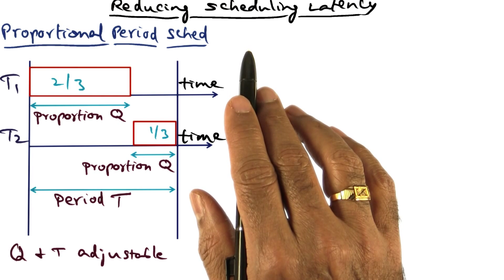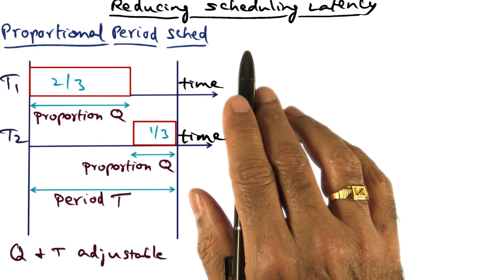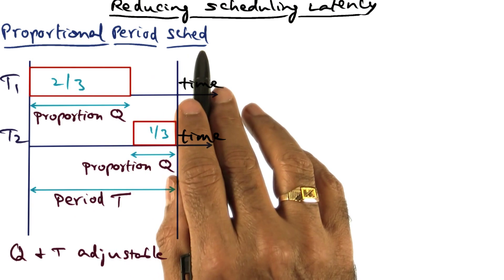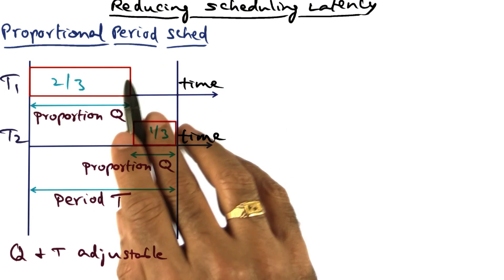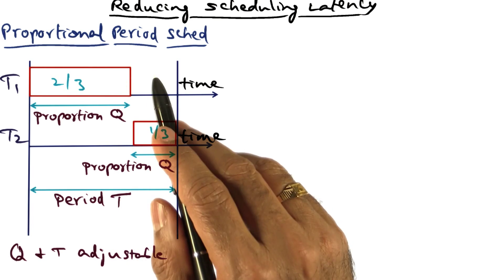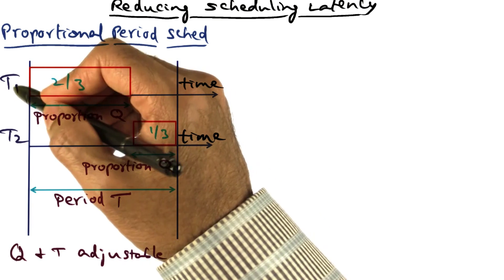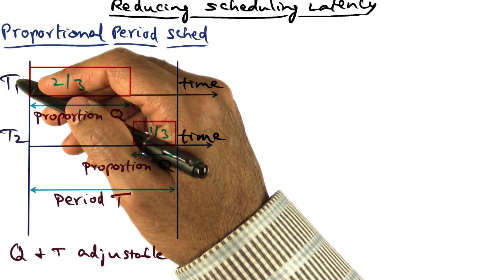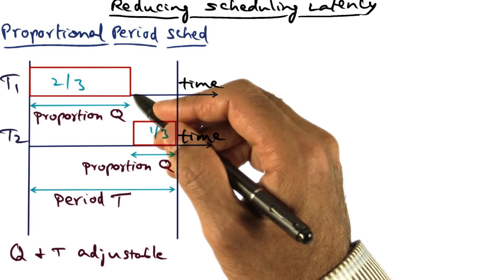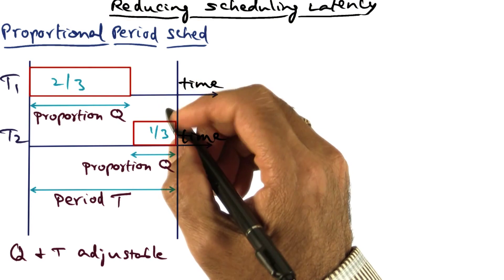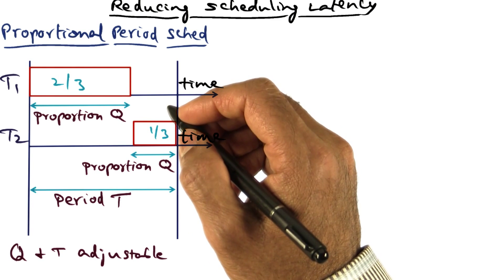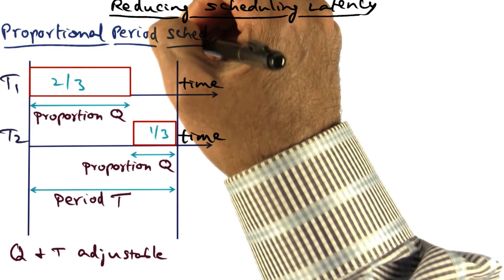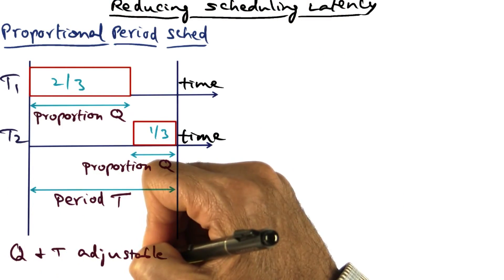Firm timer implementation in TS Linux uses a combination of two principles. One is called proportional period scheduling. And in proportional period scheduling, when a task—these things represent tasks, T1 and T2—when a task starts up, it is going to say that it needs a certain proportion of the CPU time to be allocated to it in every time quantum. So there are two parameters associated with proportional period scheduling: Q and T.